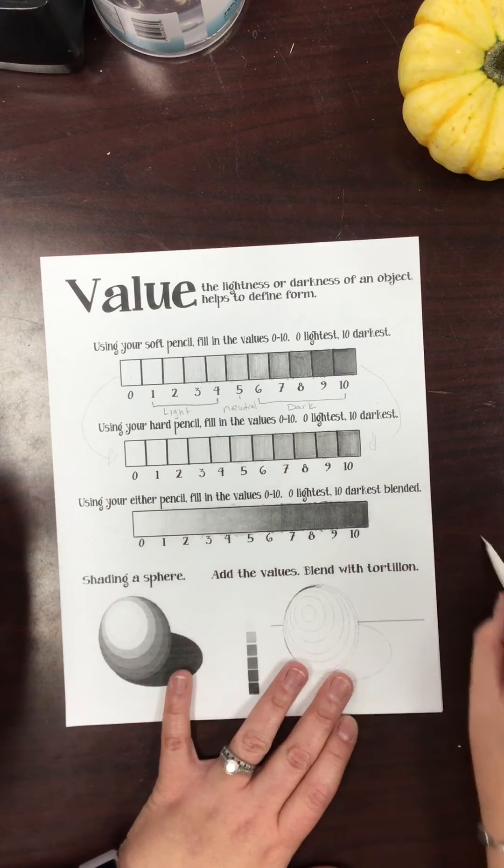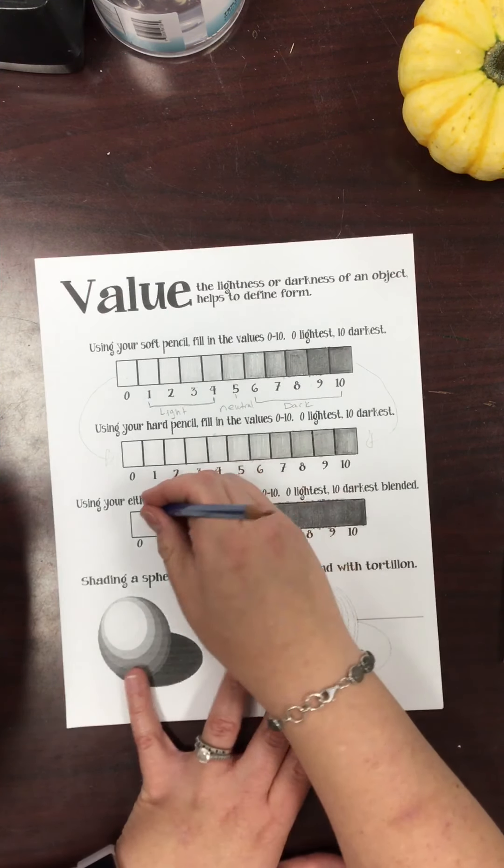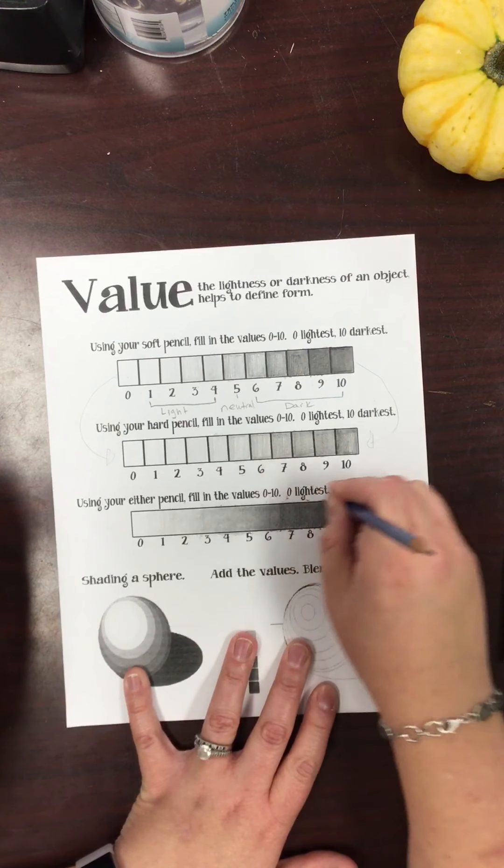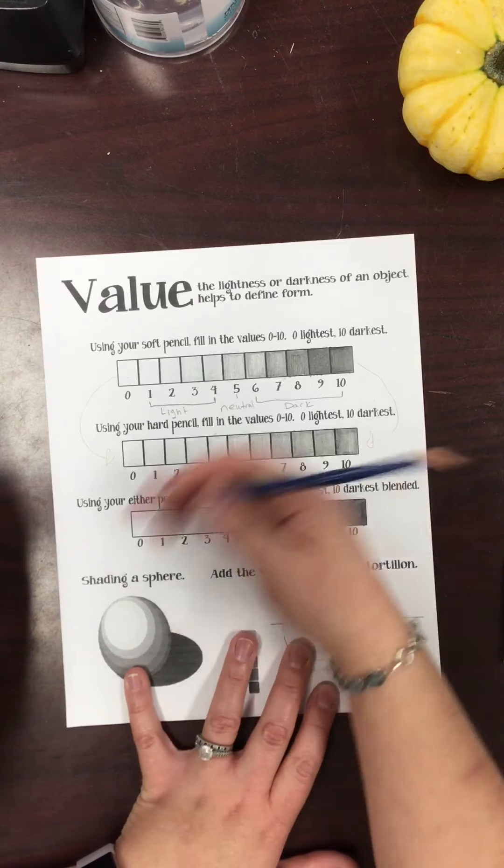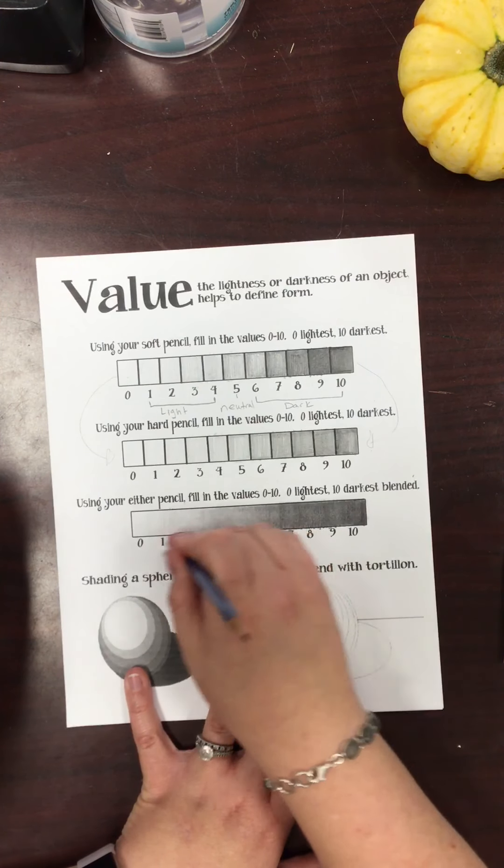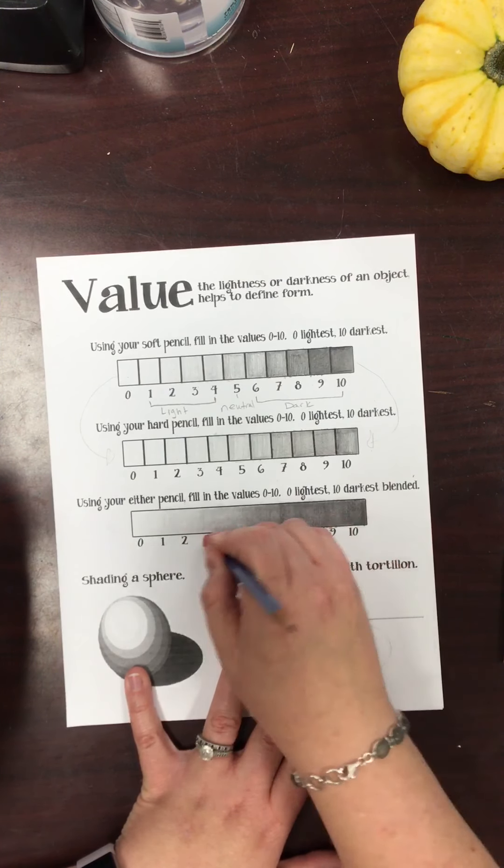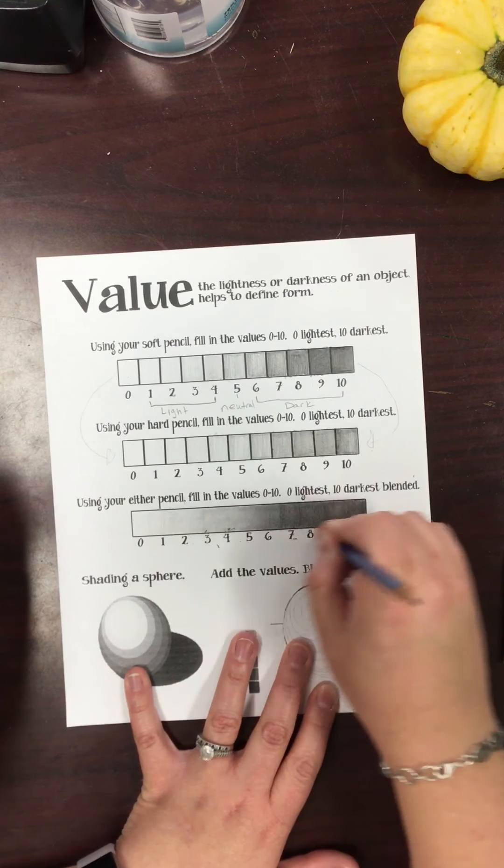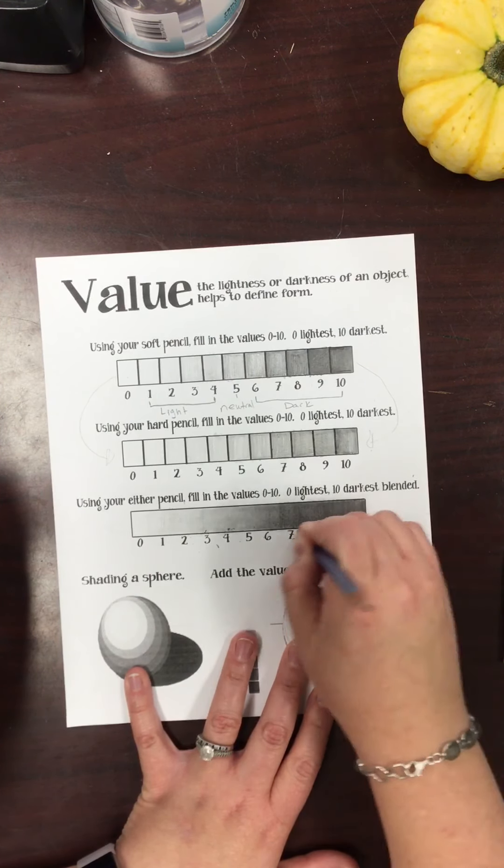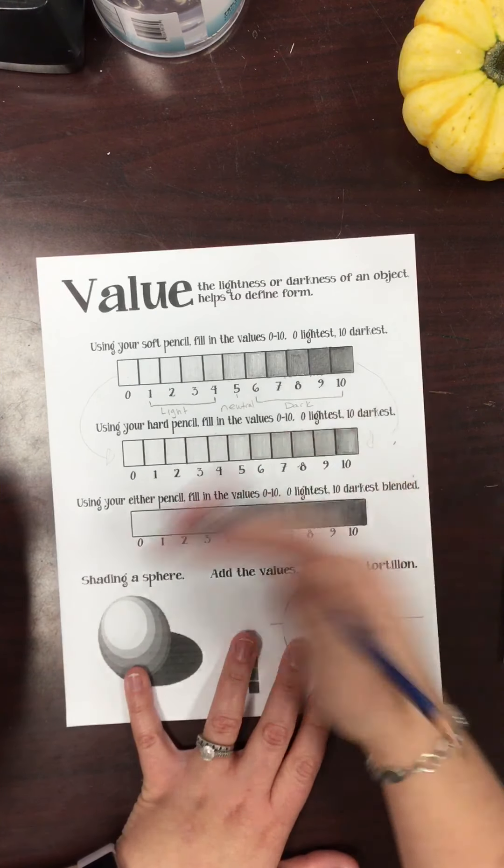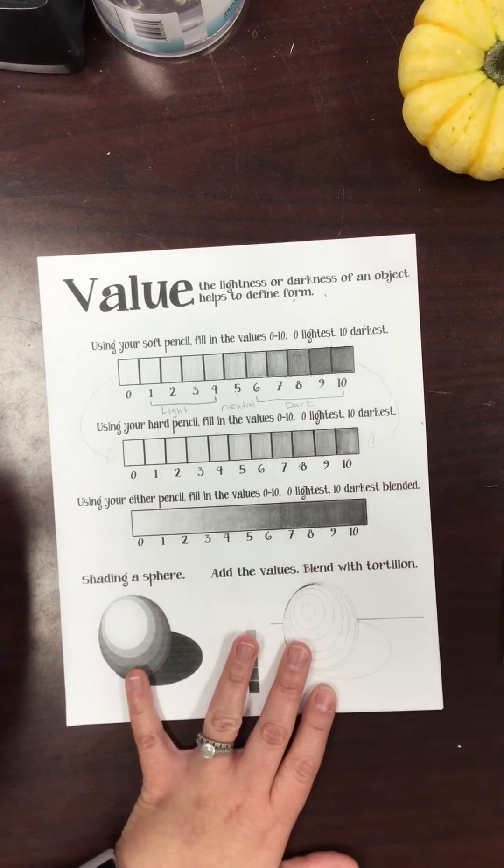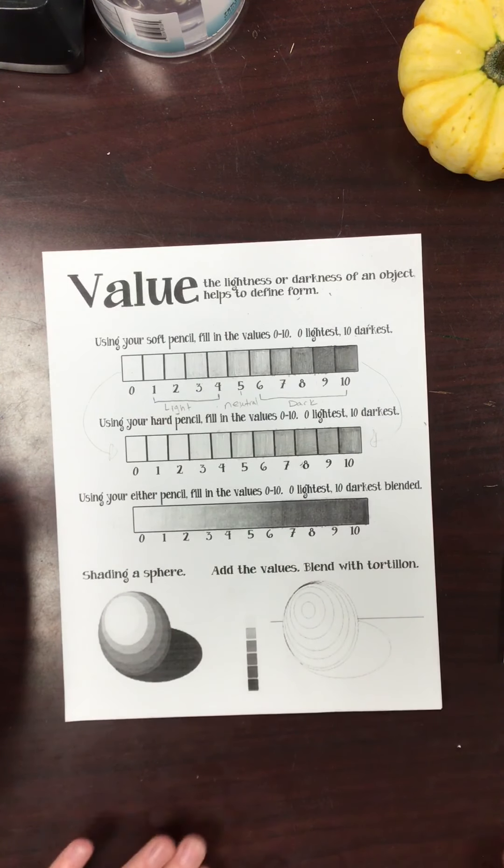Now clean up - if you went outside your lines, just take your eraser and clean up all those hairy lines there. Okay, so that's it for this faded scale here. Now I'm going to move on to the sphere and I'm going to make another different video for that.